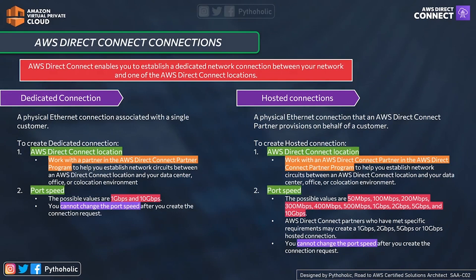You cannot change the port speed after you create the connection request for either type. This gives you an idea of how speeds vary and what customizations are possible. Based on your requirements and the speed you need, you will be charged accordingly, so make sure you make the proper decision. You can go with dedicated or hosted connection as per your requirements.